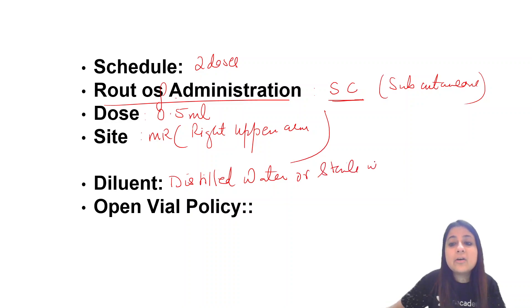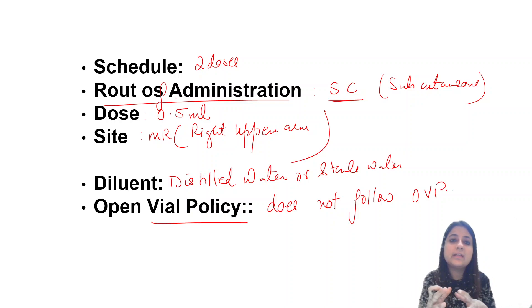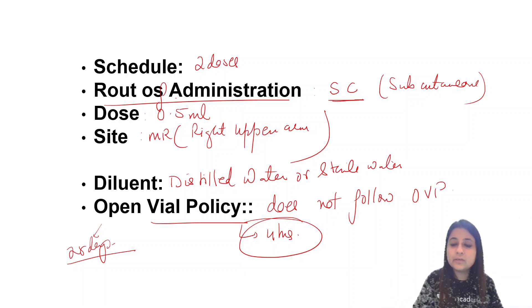Because I'm adding a diluent to it, does it follow open vial policy? No, Measles-Rubella or Measles vaccine does not follow open vial policy. Open vial policy means after opening the vaccine, it can be used up to 28 days, but this vaccine can only be used up to 4 hours after opening.